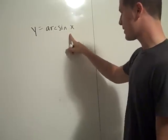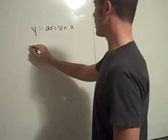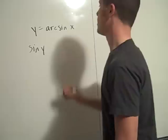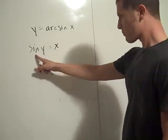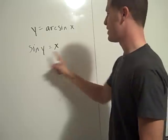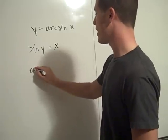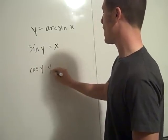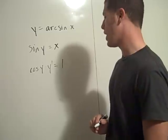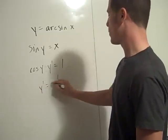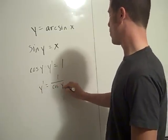Y equals arc sine x is the same as saying sine y equals x. And then we use implicit differentiation. So we have cosine y times y prime equals 1. And therefore y prime equals 1 over cosine y.